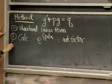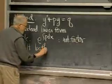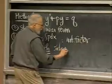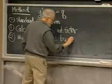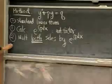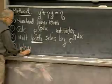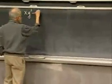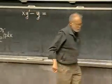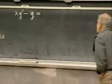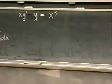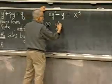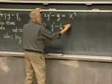Let's take a simple example. Suppose we start with xy prime minus y = x cubed. The first thing to do is put it in standard form — step zero: write it as y prime minus (1/x)·y = x squared.